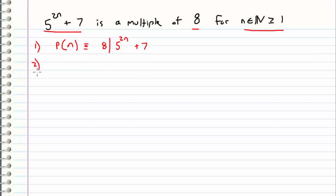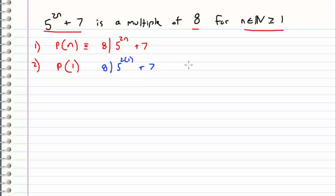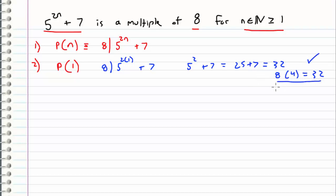The second step is to show that the initial case is true. In this example we are interested whenever n is greater than or equal to 1, so we want to show the starting case, which is P of 1, and we need to show that this is true. We need to show that 8 divides 5 to the 2 times 1 plus 7. Evaluating: 5 to the 2 times 1 is 5 squared plus 7, which equals 25 plus 7, which is 32. We know that this is divisible by 8 because we can write this as 8 times 4, which equals 32. So we have successfully shown that the case for P of 1 is true.